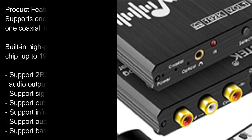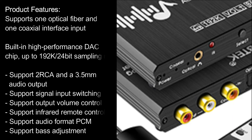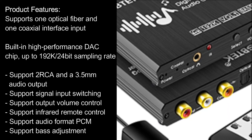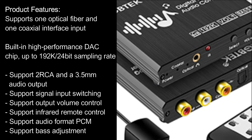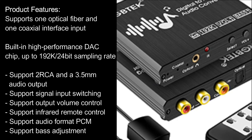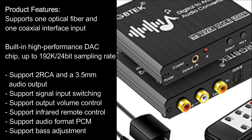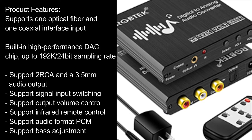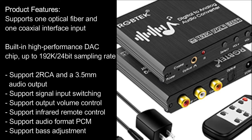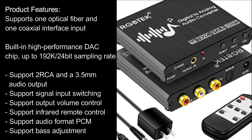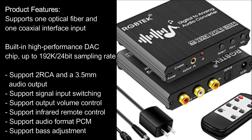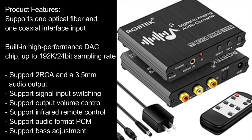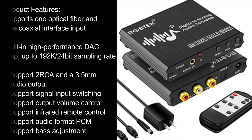Product Features: Supports one optical fiber and one coaxial interface input. Built-in high-performance DAC chip, up to 192k/24-bit sampling rate. Supports two RCA and a 3.5mm audio output. Supports signal input switching, output volume control, infrared remote control, audio format PCM, and bass adjustment.